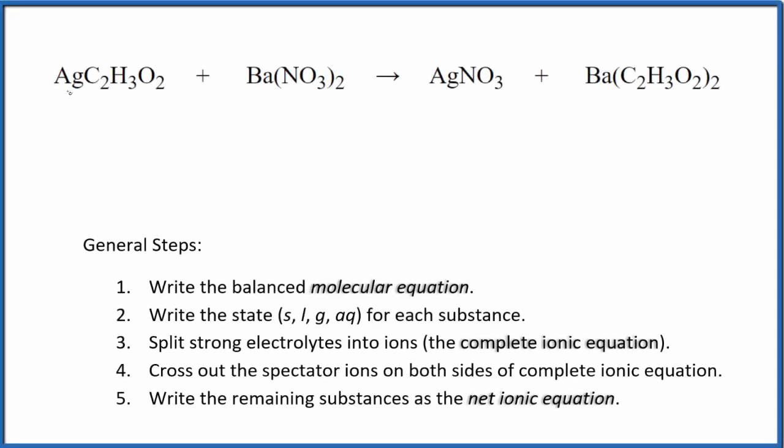Let's take a look at the net ionic equation for silver acetate plus barium nitrate. The first thing we would do is balance the molecular equation. We have an acetate here, we have two of these acetates here, so let's just put a two in front of the silver acetate. Two silvers, put a two here, those are balanced.